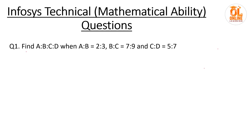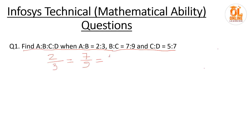In the first question, it is a ratio and proportion question. Find a:b:c:d when a:b = 2:3, b:c = 7:9, and c:d = 5:7. To solve, first write it in the p/q form: two-thirds, seven-ninths, then five-sevenths.